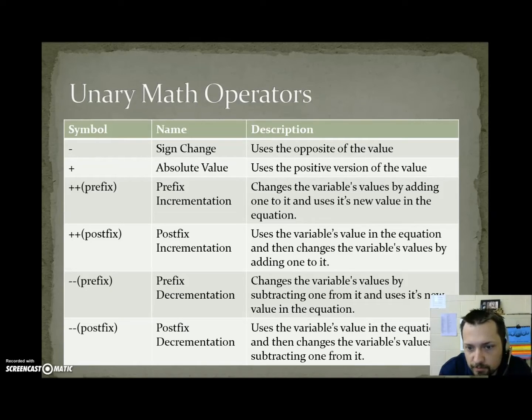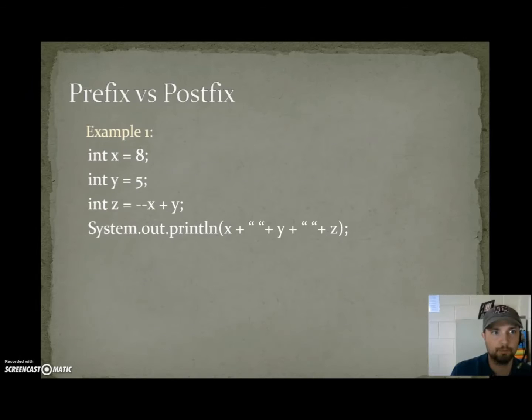Minus minus prefix, or prefix decrementation, changes the variable's value by subtracting one from it and uses the new value in the equation. Minus minus postfix, or postfix decrementation, uses the variable's value in the equation and then changes the variable's value by subtracting one from it. I know this seems like a lot. We are going to cover some examples of prefix and postfix incrementation and decrementation so you can understand what those really mean.